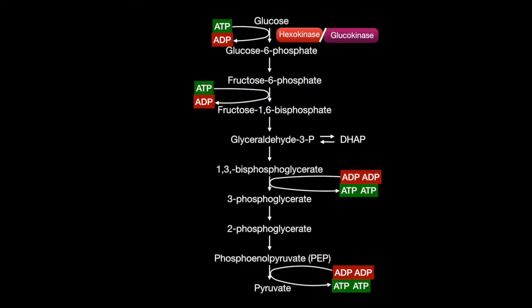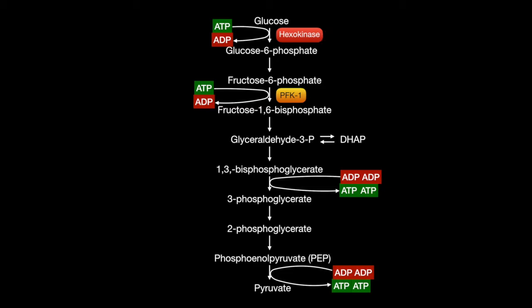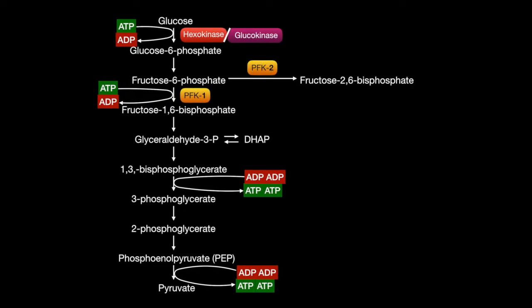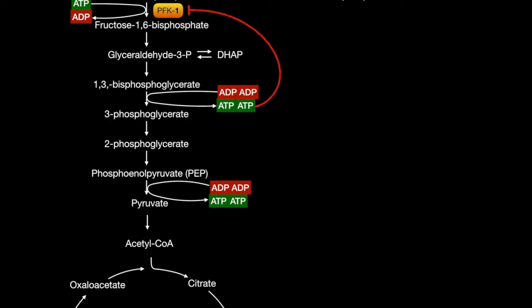The enzymes that use ATP are hexokinase and glucokinase, and phosphofructokinase-1, which is the rate-determining enzyme in glycolysis. Hexokinase in the tissues is inhibited by its immediate product, glucose-6-phosphate, and glucokinase in the liver is inhibited by fructose-6-phosphate. The rate-limiting phosphofructokinase-1 is activated by both AMP and fructose-2,6-bisphosphate, but inhibited by ATP and citrate.